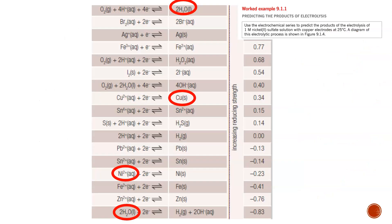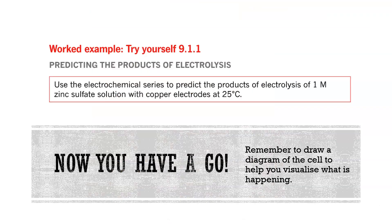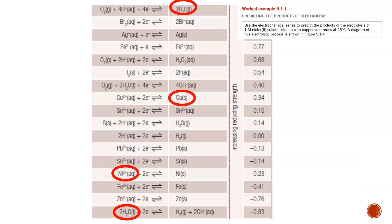This is determined by looking at the electrochemical series in your booklet. Nickel 2+ and copper solid are closer together on the series, so that is the reaction we observe.